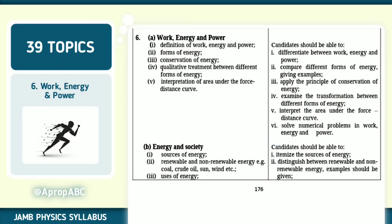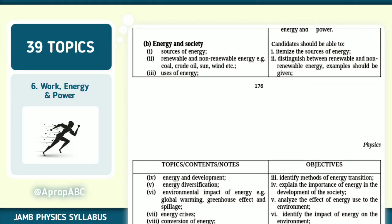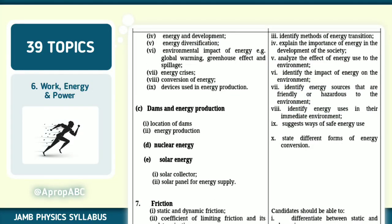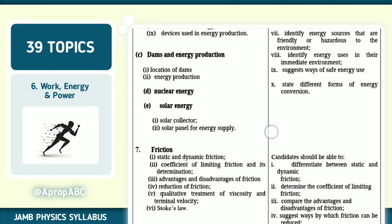The sixth topic we have is work, energy and power. Definition of work, energy and power. Forms of energy, conservation of energy, utilization of area under the force-distance curve. Different forms of energy and power. Application of principles of conservation of energy. You should be able to examine the transformation between different forms of energy. The seventh topic is energy and society. How does this energy affect us in the society? Sources of energy, renewable and non-renewable energy: coal, sun, wind. Uses of energy, note them as well. Advantages and disadvantages in energy production. The eighth one is dams and energy production. Just like in Nigeria we make use of Kainji dam. Note that as well and do more research on them. Make sure the objectives that JAMB would like you to note for that particular topic are all well noted.